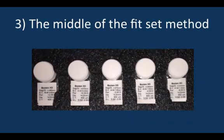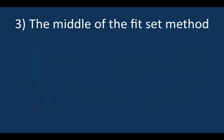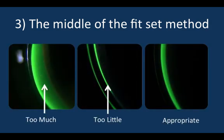With the third method, you select a lens typically from the middle of the fitting set and evaluate what it looks like in order to guide you on the selection of your next diagnostic lens. One of three things will happen with this first lens. You'll either have too much sagittal depth, not enough, or your lens will fit appropriately.